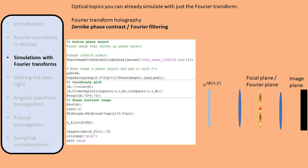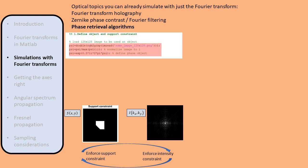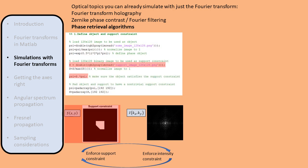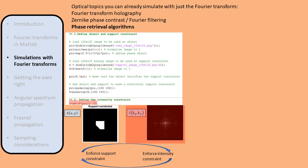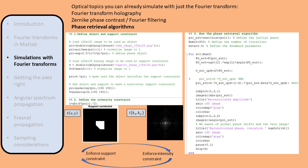With Fourier transforms, we can also test iterative phase retrieval algorithms. We define an object to reconstruct from its far-field intensity pattern and the support constraint it should satisfy. To compute the far-field intensity pattern, we take the squared modulus of the Fourier transform of the object. The algorithm alternatingly enforces the intensity constraint and the support constraint. Such simulations can be used to investigate the convergence behavior of different phase retrieval algorithms, or to see how they are affected by measurement noise.